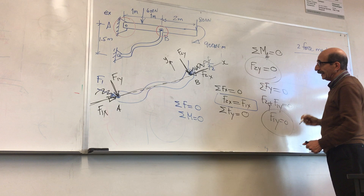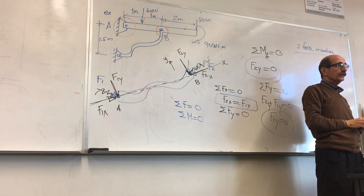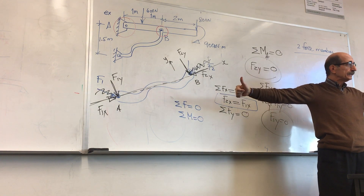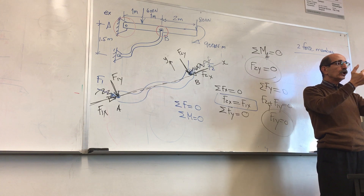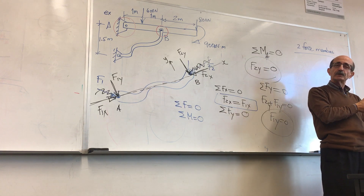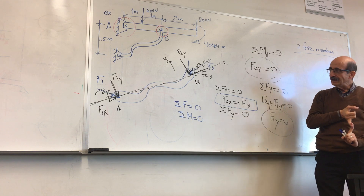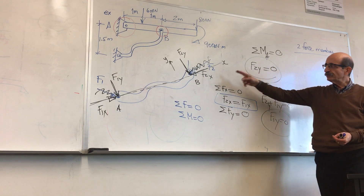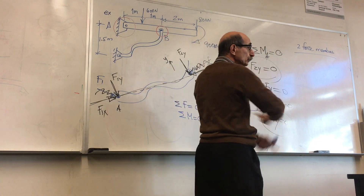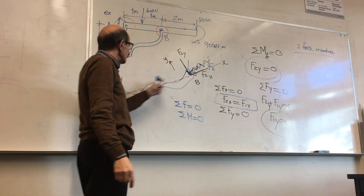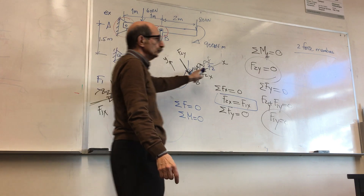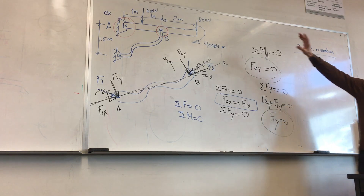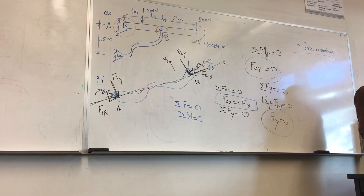A two-force member is: if you have a member, regardless of its shape, that is pinned at both ends (requirement one) and no load acts along that member (requirement two), then for that member to be in equilibrium, the forces acting at the two ends must be equal and act along the straight line connecting those two points together. We'll see the significance of this concept later, and then we'll solve that problem.